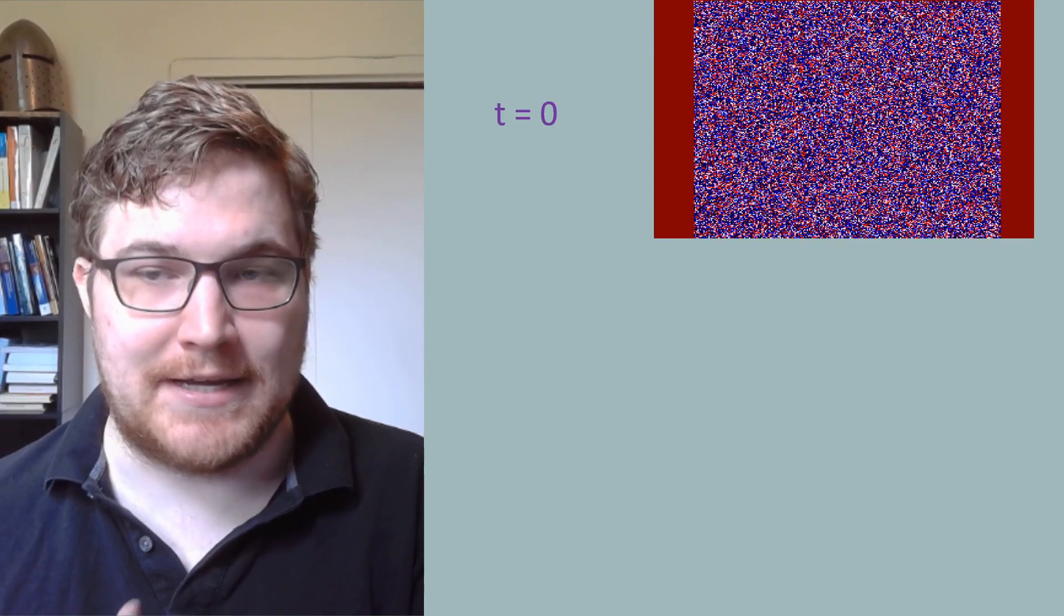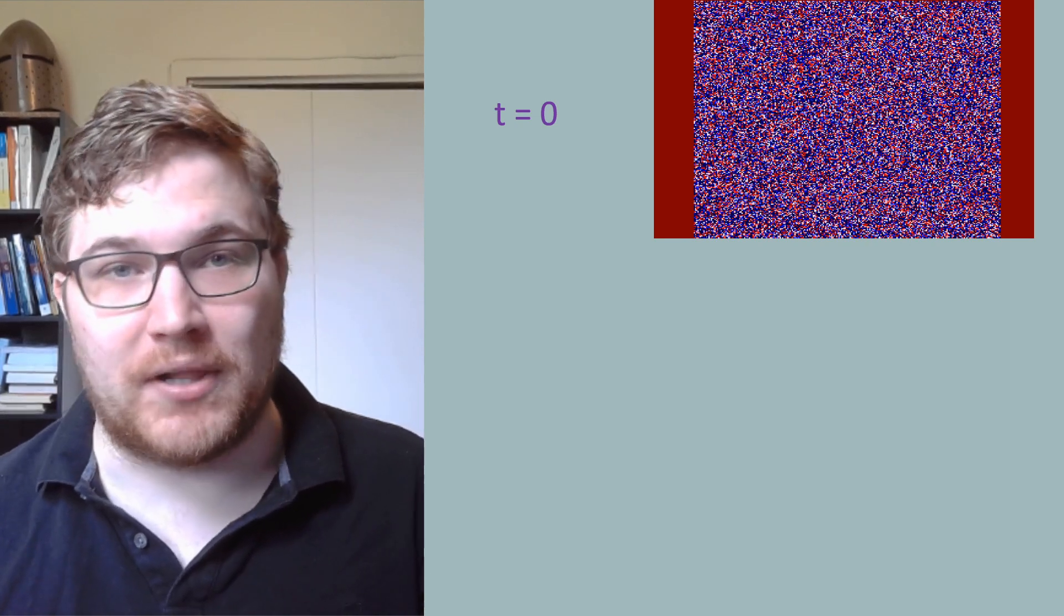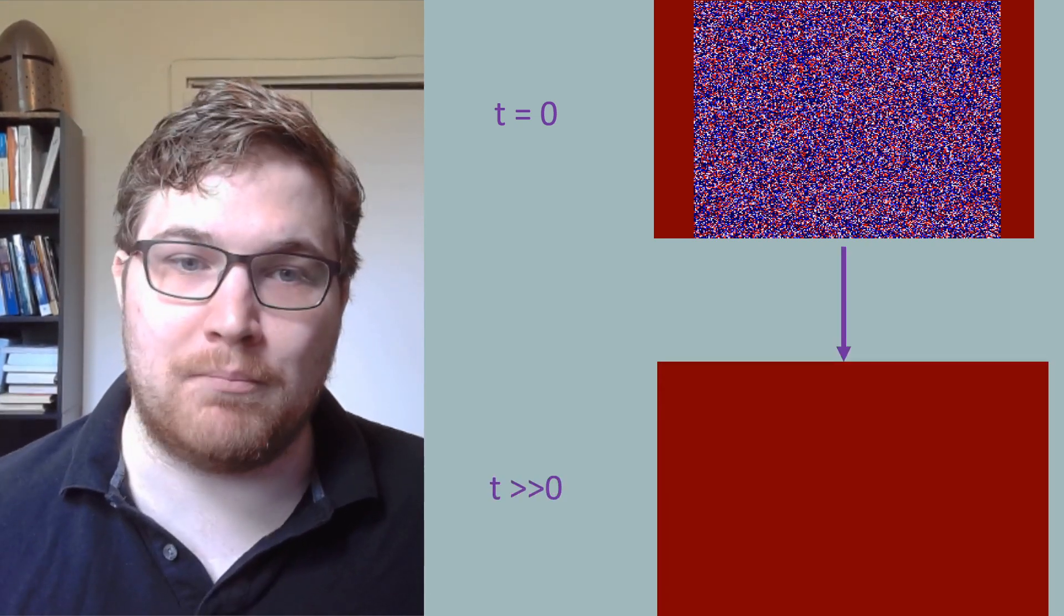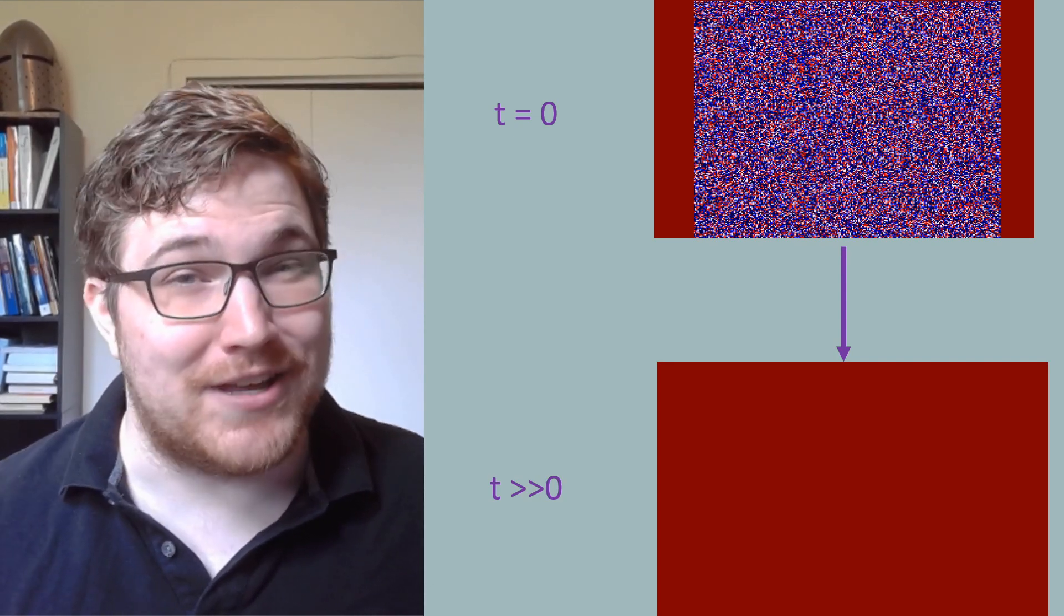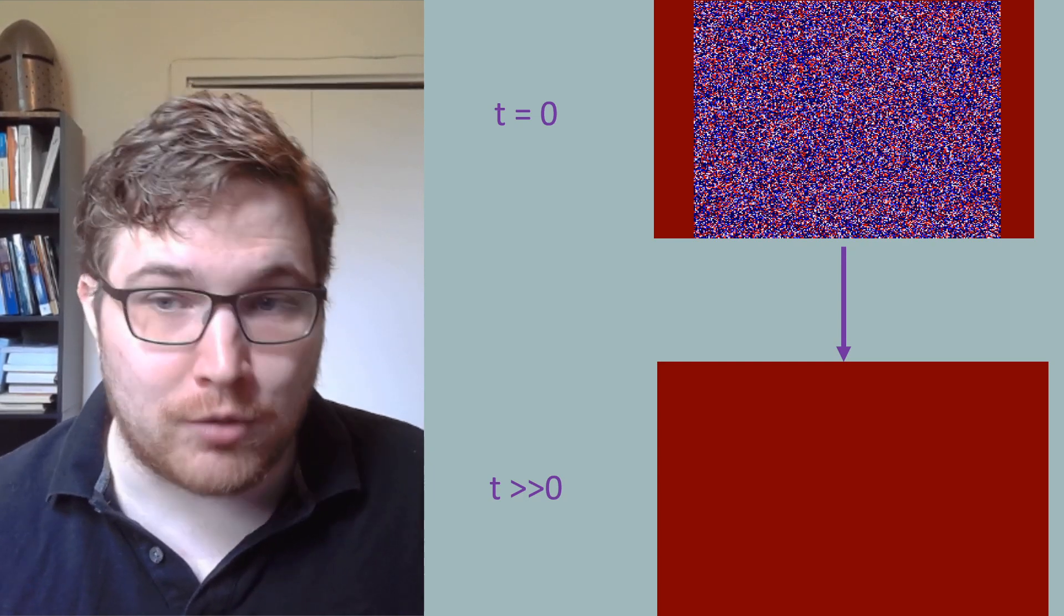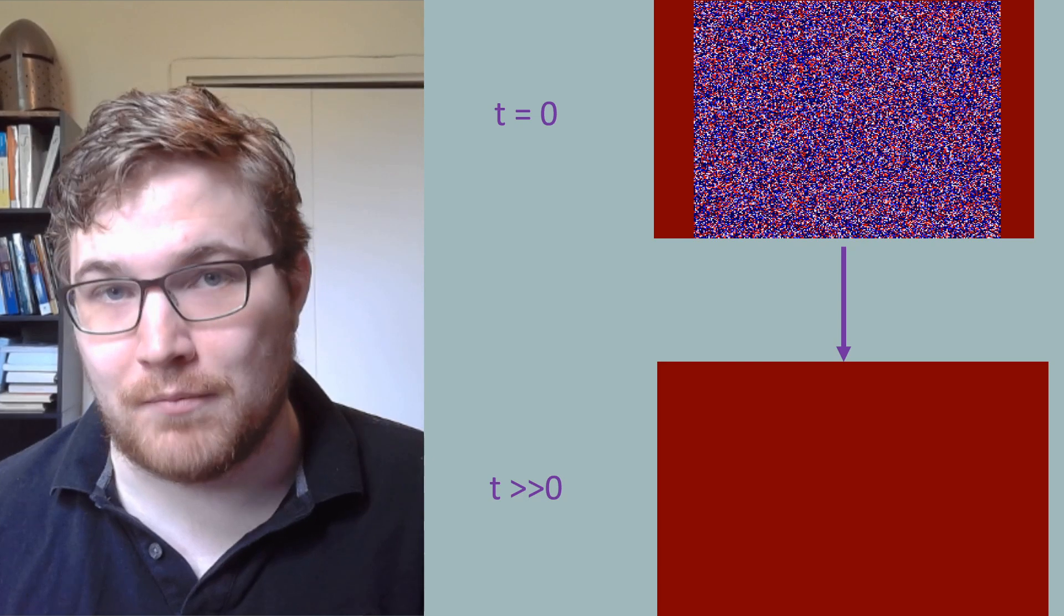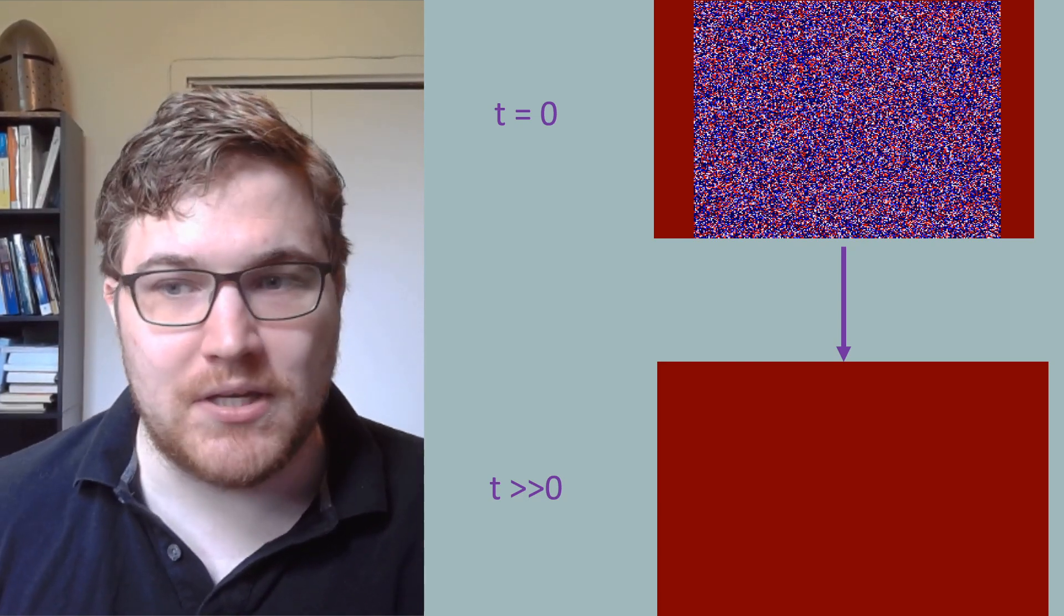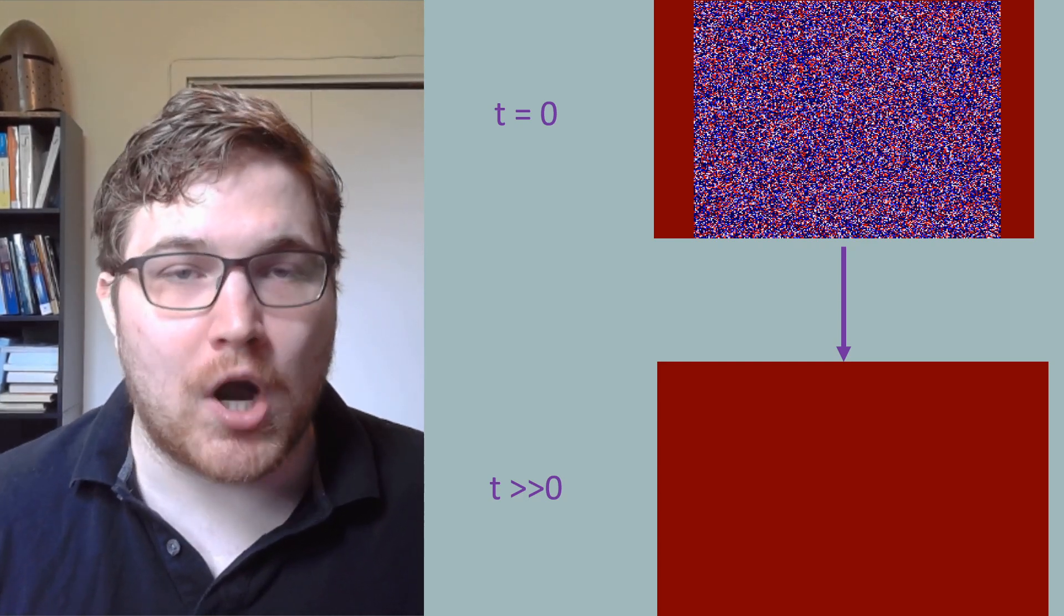So we went from a situation that looked like this at t equals zero, notably an initial condition with complex structure, to a completely uniform, all one temperature late-time state of the system. This was the process of the heat bath thermalizing our grid to be the same temperature as the bath.